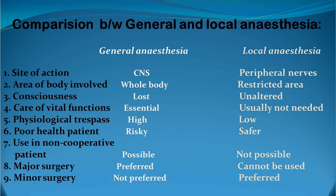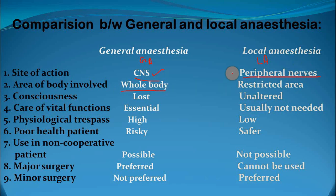Let's see the difference between general and local anesthesia. The site of action: general anesthesia (GA) acts on the CNS, whereas LA acts on the peripheral nerves. The area of body involved is totally different — in general anesthesia, the site of action is CNS, so the whole body is involved, whereas in local anesthesia, the restricted area of that nerve will be involved.